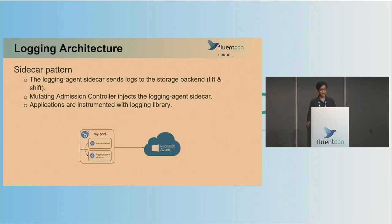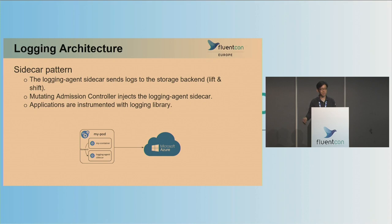We have two logging solutions. One is the sidecar pattern — it's fairly straightforward. The application writes logs to the logging agent sidecar through the forward or message pack protocol, and the logging agent sidecar then sends those logs to the storage backend. The logging agent sidecar is automatically injected by the mutating admission controller.